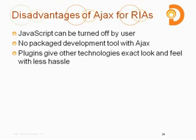Some disadvantages of Ajax: one, it can be turned off. JavaScript can actually be turned off by the user. However, there are techniques like progressive enhancement, or the industry term 'hijax,' to write code that works well even with JavaScript turned off — which is also important for accessibility. A disadvantage could also be that there's no packaged development tool. And plug-ins, even though they are large, really give a true consistent look and feel across all browsers that Ajax just won't do quite as easily.